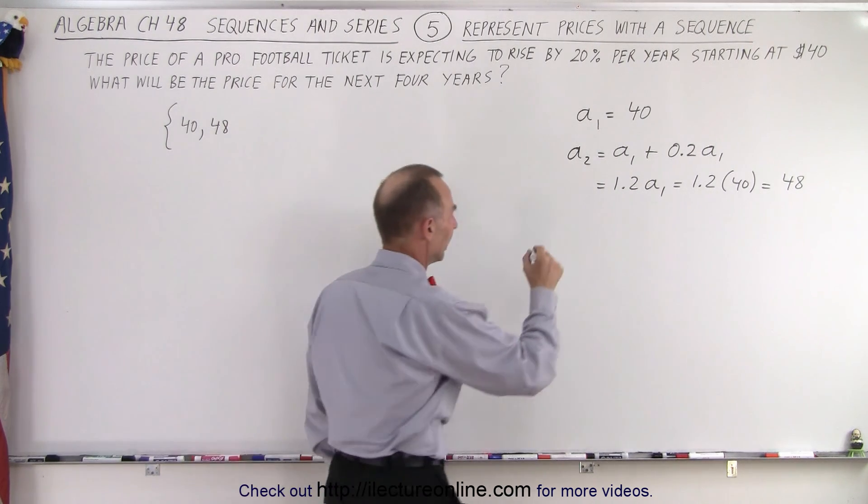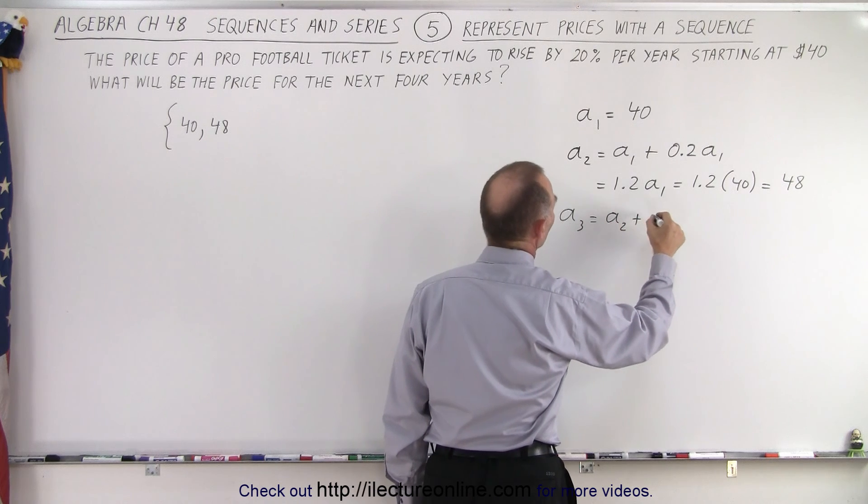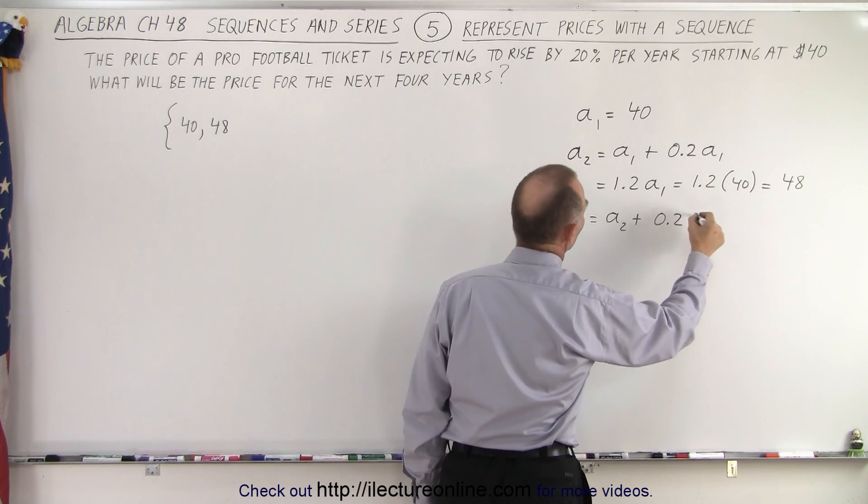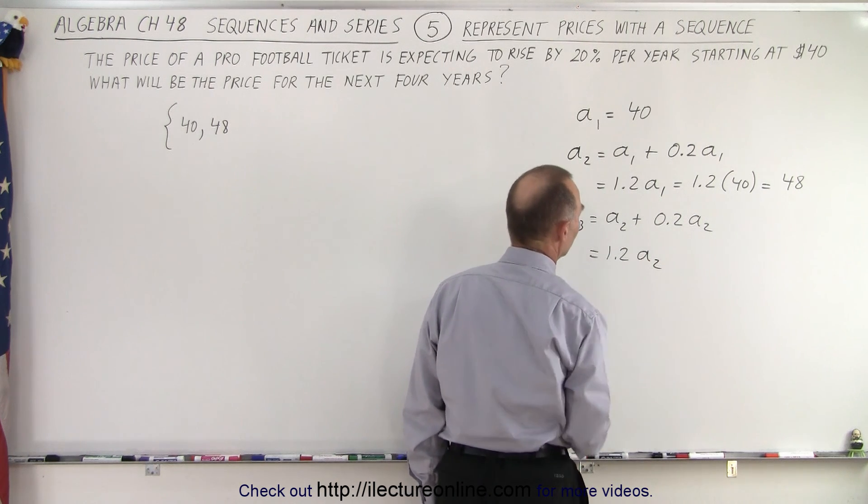How about the third term? Well, a₃ will be equal to a₂ plus another 20% added to a₂. In other words, that's equal to 1.2 times a₂.